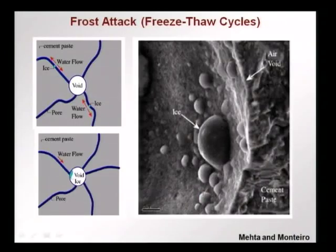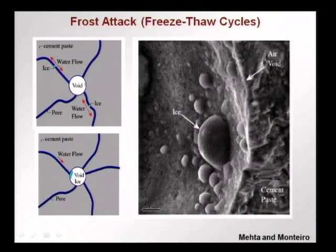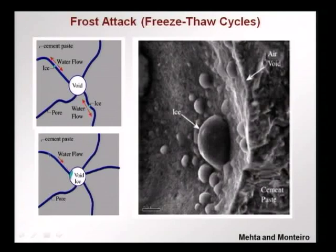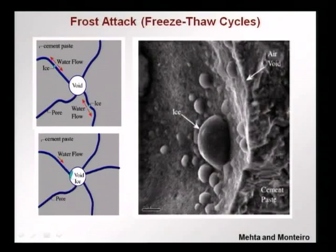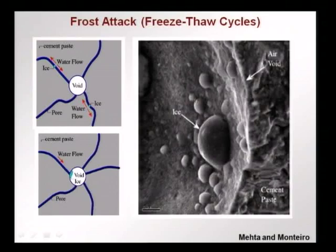Microscope images show how ice forms in capillaries, compresses water, and — if an air void is nearby — the water is pushed into the void and expands without creating high pressure. Where no air void is available, disintegration can occur around the ice. A microscope image from Mehta and Monteiro shows ice having formed within an air void in the hydrated cement paste — the ideal scenario, with no pressure buildup and ample space for ice to form.